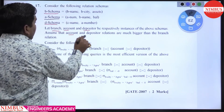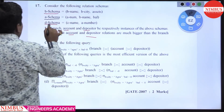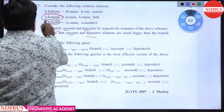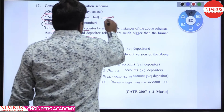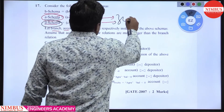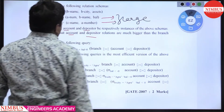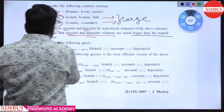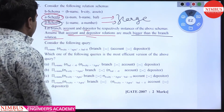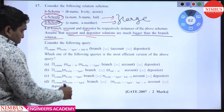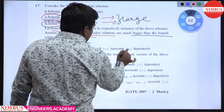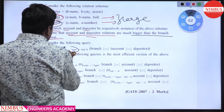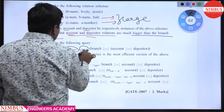Assume that the account and depositor relations are much bigger than the branch relation — account and depositor have a large database compared to branch. The following query involves branch_ct equal to AGRA and balance less than 0.